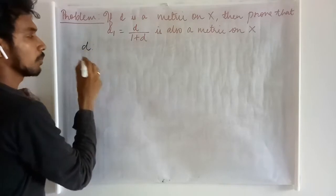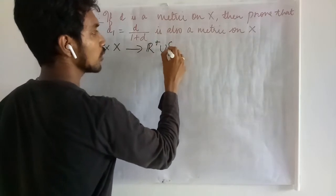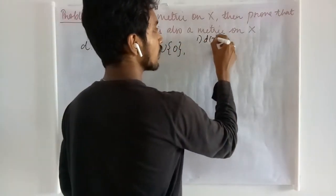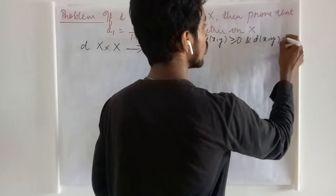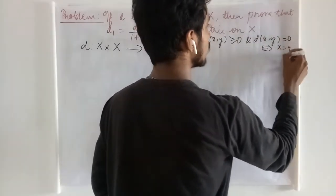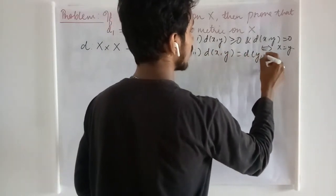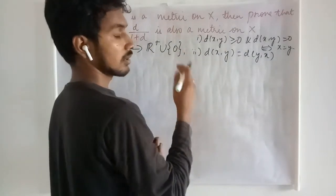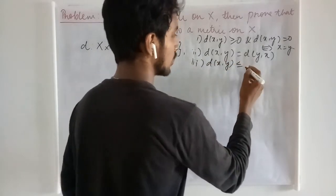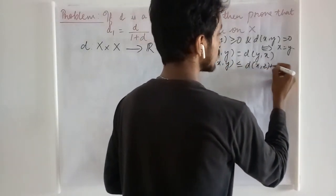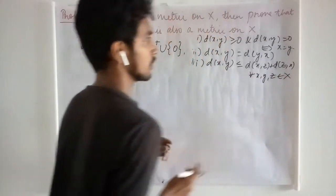D is defined to be a proper metric, that is, a mapping from X cross X to the set of all non-negative real numbers, satisfying: D(x,y) is non-negative and D(x,y) = 0 if and only if x and y are the same. The second condition is D(x,y) = D(y,x), satisfying symmetry. The third condition is the triangle inequality, that is, D(x,y) ≤ D(x,z) + D(z,x), and these results are true for all elements in X.